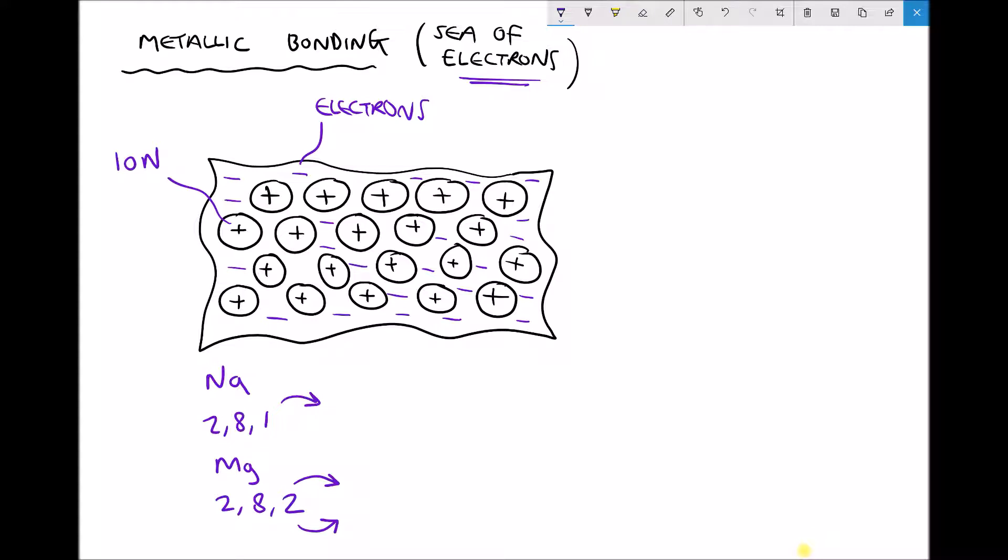We spoke about some of the common properties of metals and how they were malleable and ductile. If we can imagine, if we were to strike this piece of material, then what we might do is knock some of those ions out of place. But what those ions will then do is just find themselves a new place within the lattice of the material.